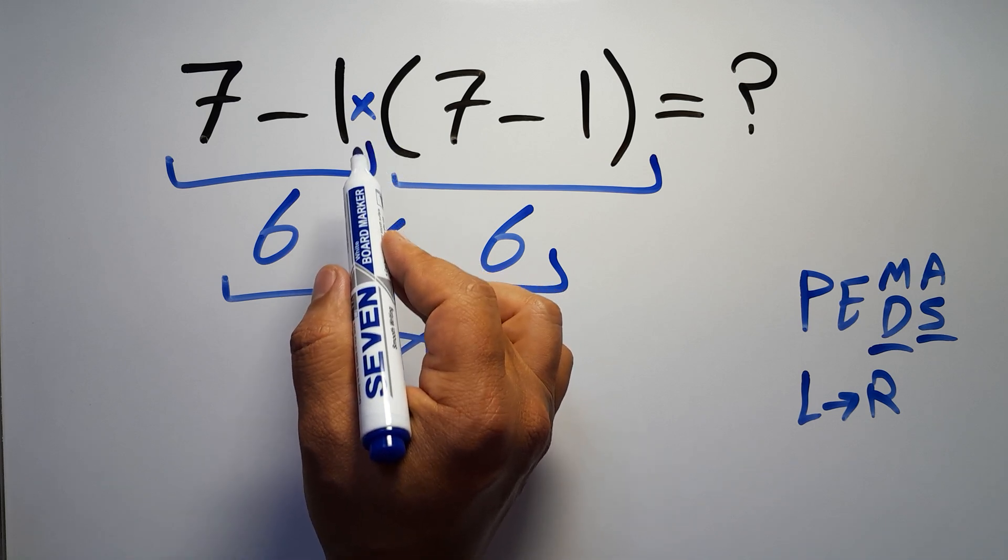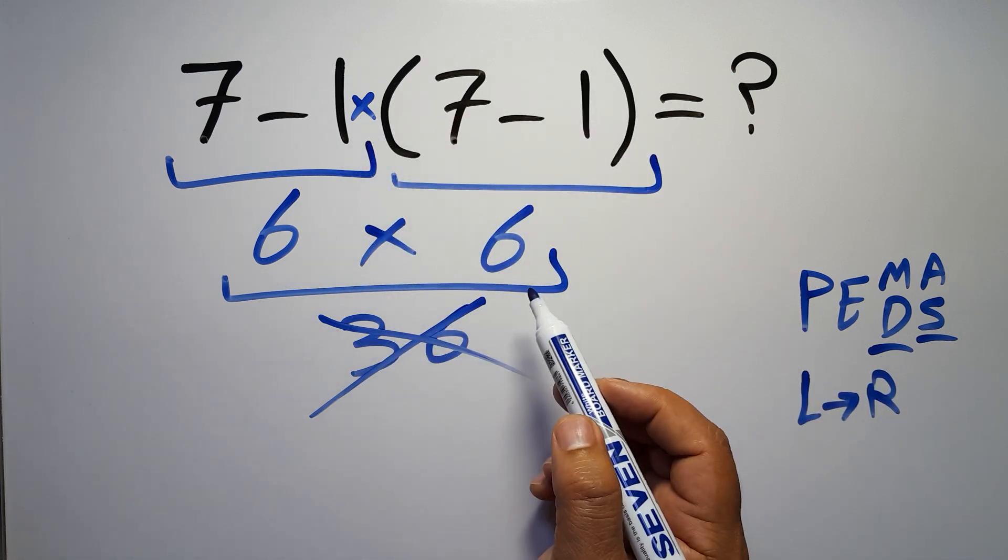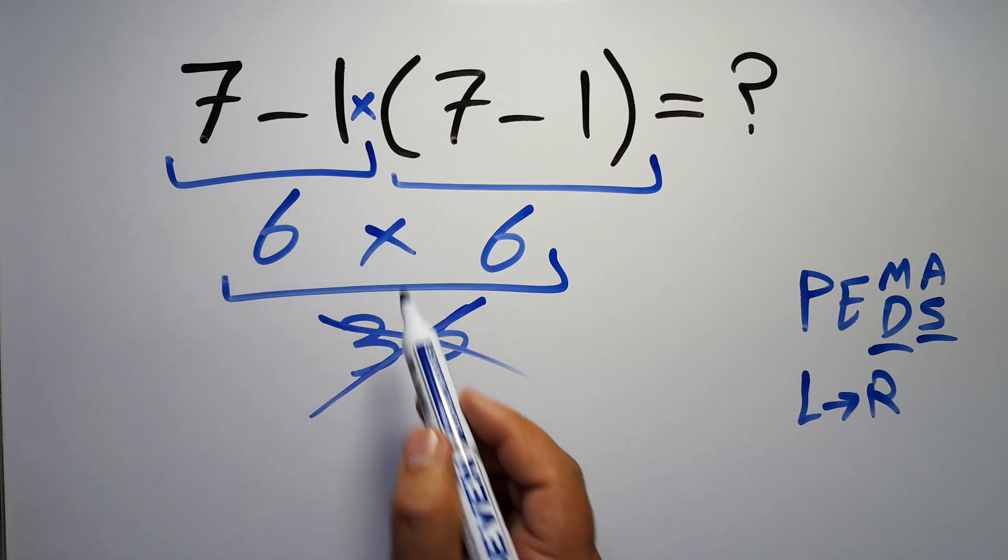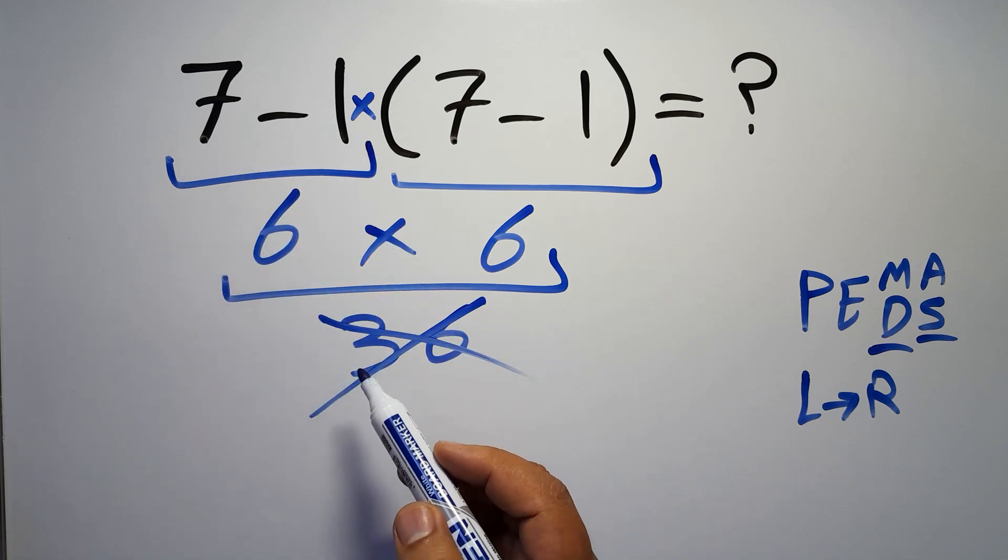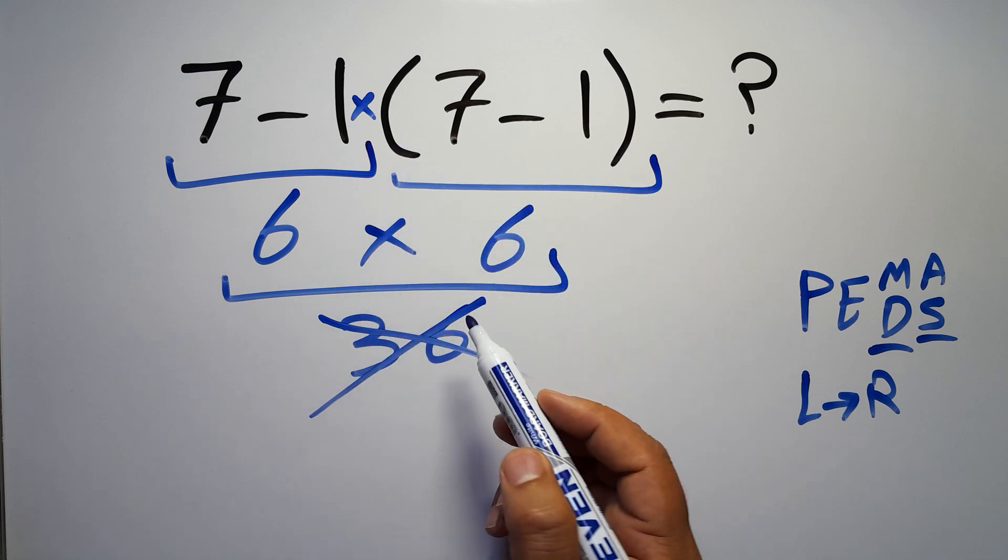So according to the PEMDAS, first we have to do this parentheses, then this multiplication, and then finally this subtraction. If we do this subtraction before this multiplication or this parentheses, it is wrong.